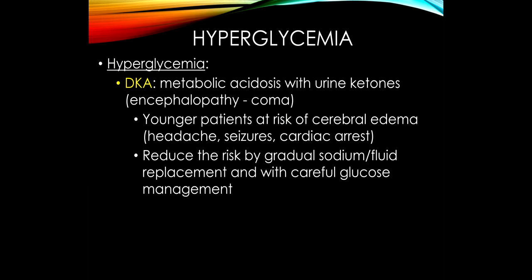Hyperglycemia can do a lot of things that involve the nervous system. Diabetic ketoacidosis — DKA — involves metabolic acidosis with urine ketones in the context of hyperglycemia, and usually causes the patient to be encephalopathic. If it's severe, they may even be in a coma. Younger individuals, especially under the age of 20, are at risk for developing cerebral edema. Because of that swelling, they'll complain of headaches. There can be cortical irritation, so patients may even have seizures. These patients can even have a cardiac arrest.